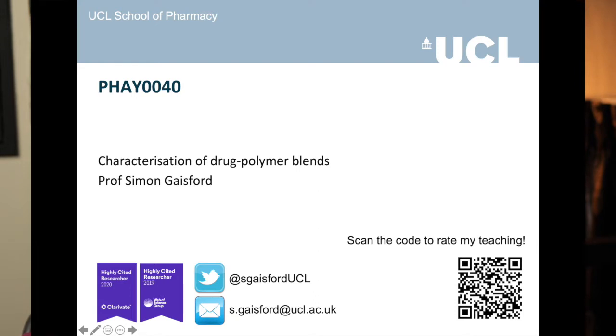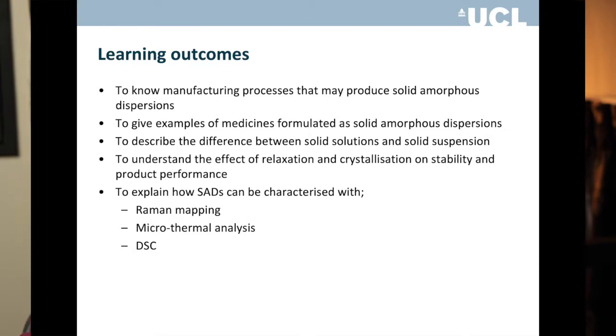So what do you need to know by the end of the lecture? The first thing you need to know is which manufacturing processes can be used to make solid amorphous dispersions. Because this lecture is about characterising solid amorphous dispersions rather than manufacturing them, I'm going to do something unusual — I'm going to set you some homework in a few slides time.